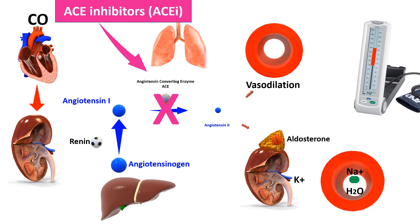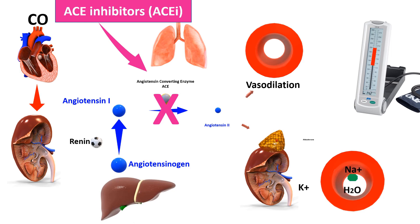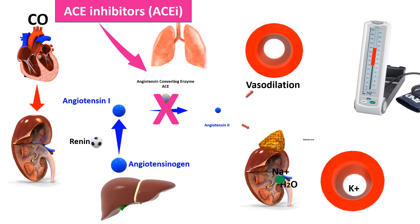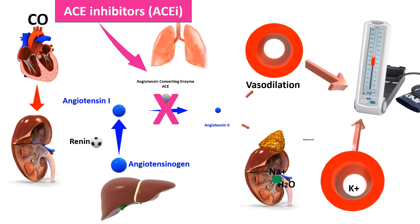Similarly, aldosterone secretion will be suppressed, and as a result more sodium and water will be excreted into the urine. Both vasodilation and decreased blood volume will result in decreasing blood pressure.